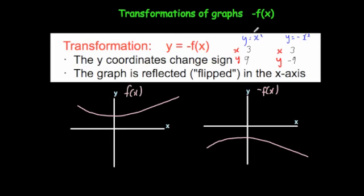In today's video we're going to look at transformations of graphs, specifically minus f of x. If you had y equals x squared and x is equal to 3, you'd get 3 squared which is 9, so y equals 9. However, if you had y equals minus x squared and x is equal to 3, you'd get minus 9. So if you do the transformation y equals minus f of x, the y coordinate changes sign, and the effect on the overall graph is that it is reflected in the x-axis.